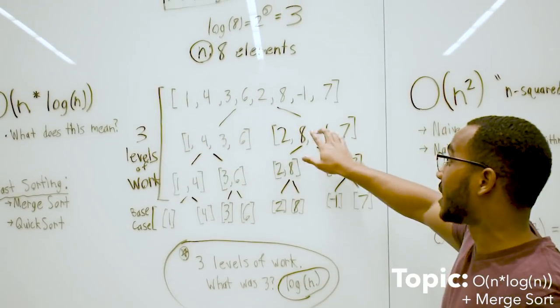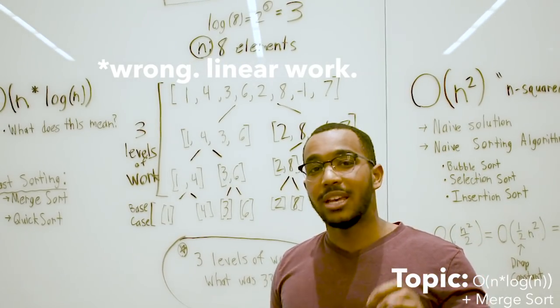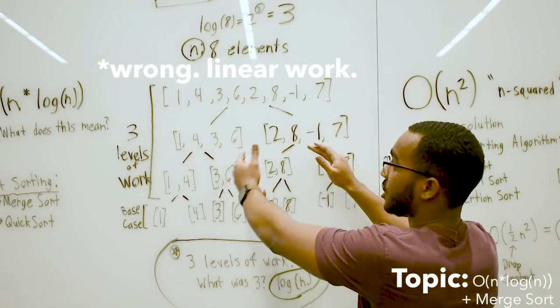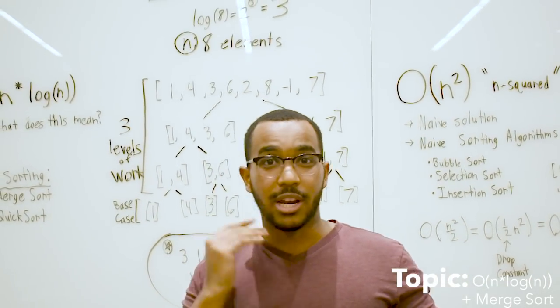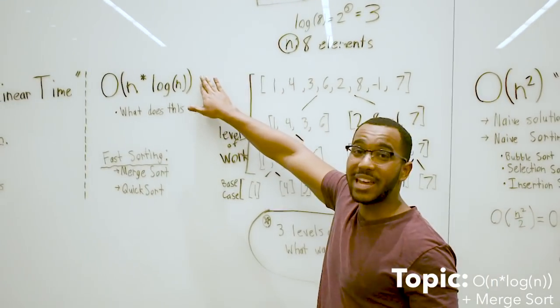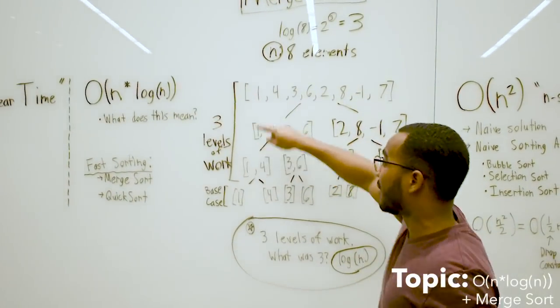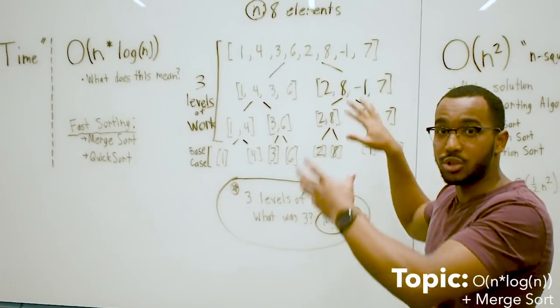For each of those log n levels, which in this case are 3 levels because log 8 is 3, for each of those 3 levels, we're going to be doing constant work. We're going to be touching all n elements in each level to be merging on the way up. This is very fundamental.